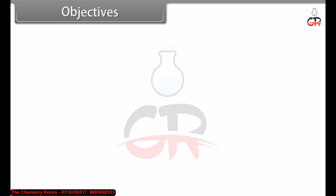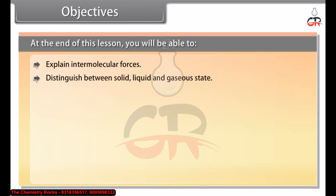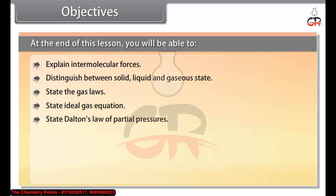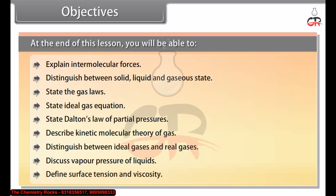Objectives: At the end of this lesson, you will be able to explain intermolecular forces; distinguish between solid, liquid and gaseous state; state the gas laws; state the ideal gas equation; state Dalton's law of partial pressures; describe the kinetic molecular theory of gas; distinguish between ideal gases and real gases; discuss vapor pressure of liquids; and define surface tension and viscosity.